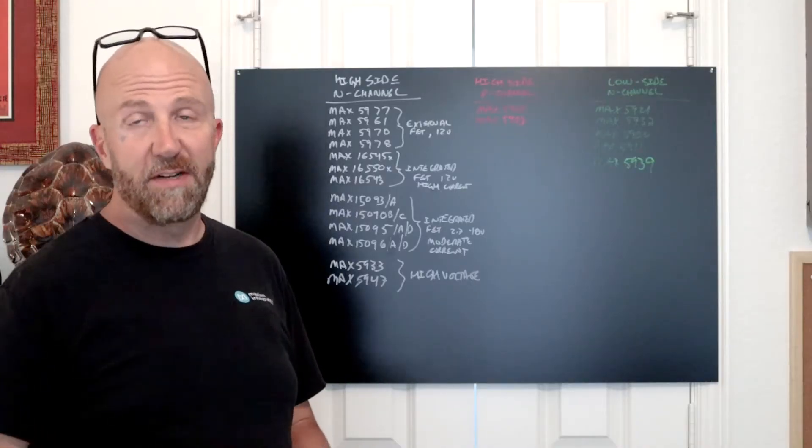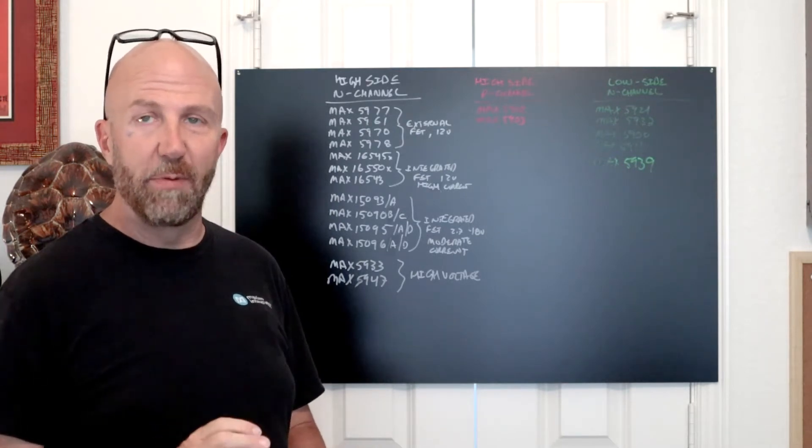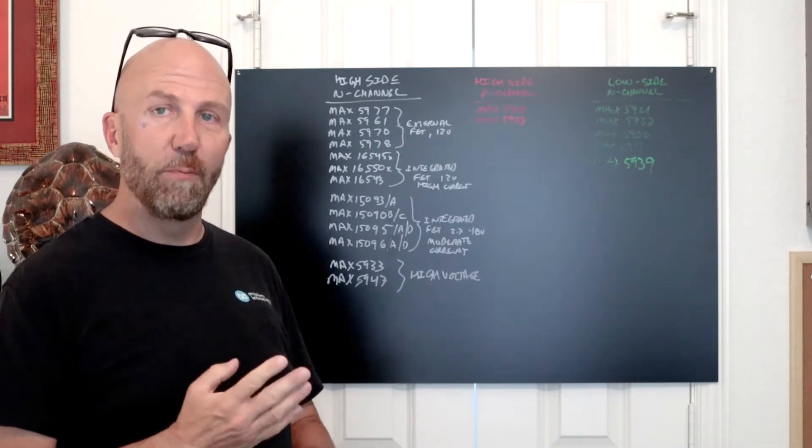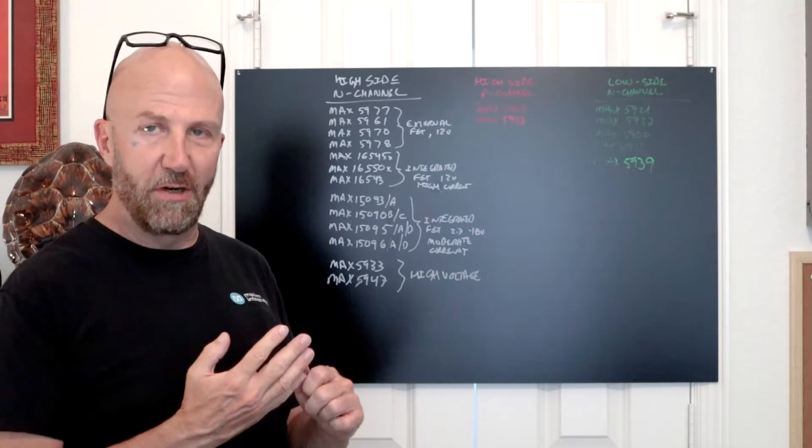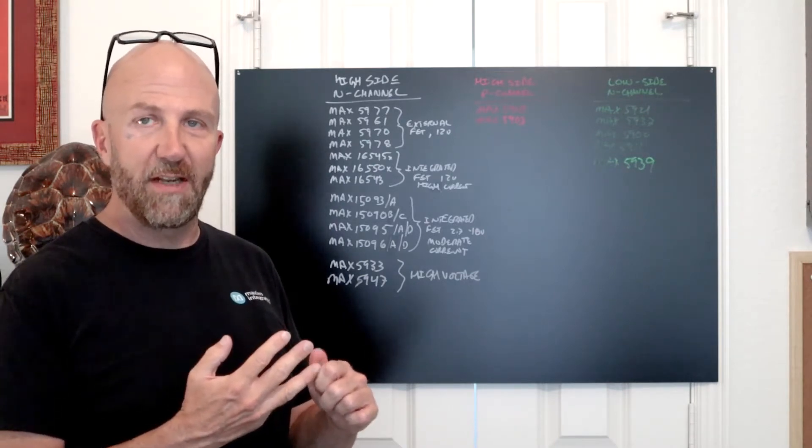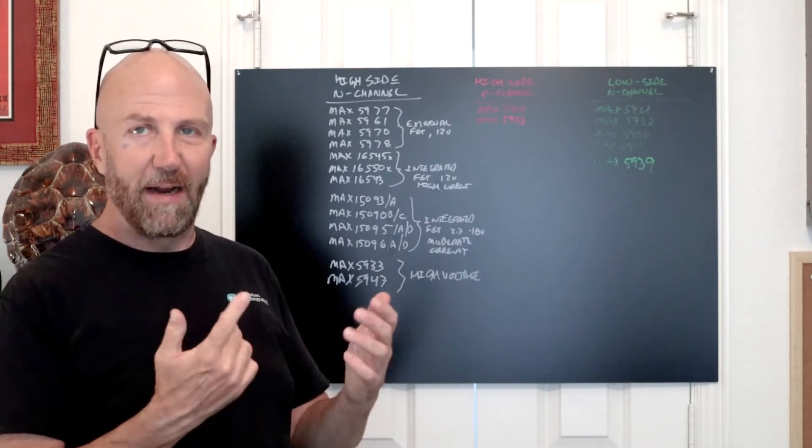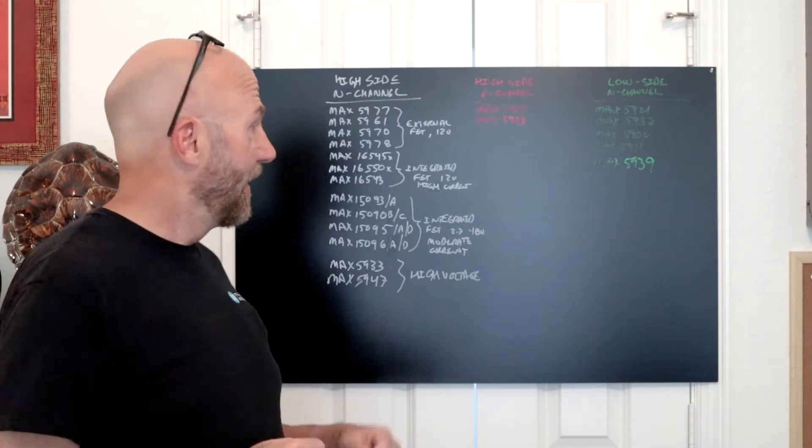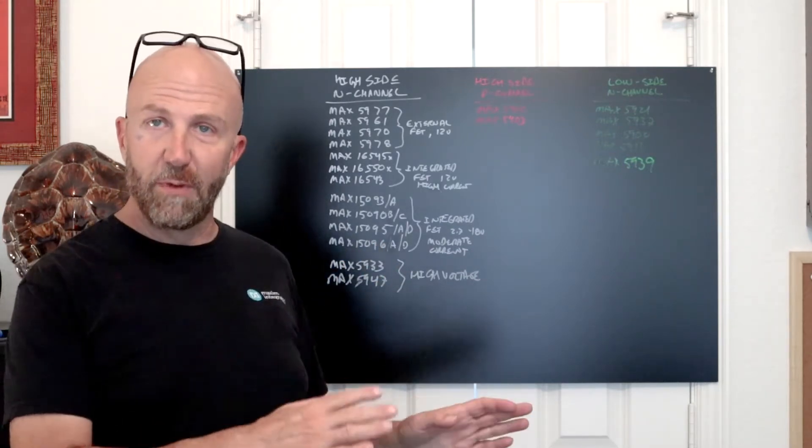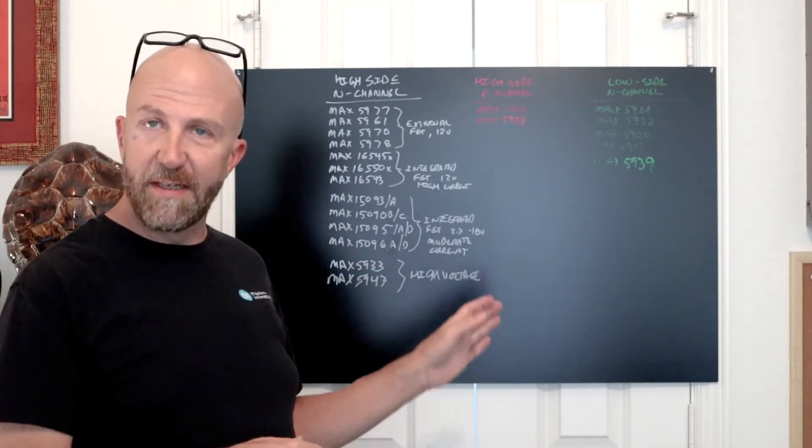At this point, I feel like we've just scratched the surface of hot swap control and power protection, but we did cover the four major circuit architectures—high side N channel, high side P channel, low side N channel, and the hypothetical low side P channel. Along those lines, I want to run through a list of Maxim ICs that fall into each of those categories.